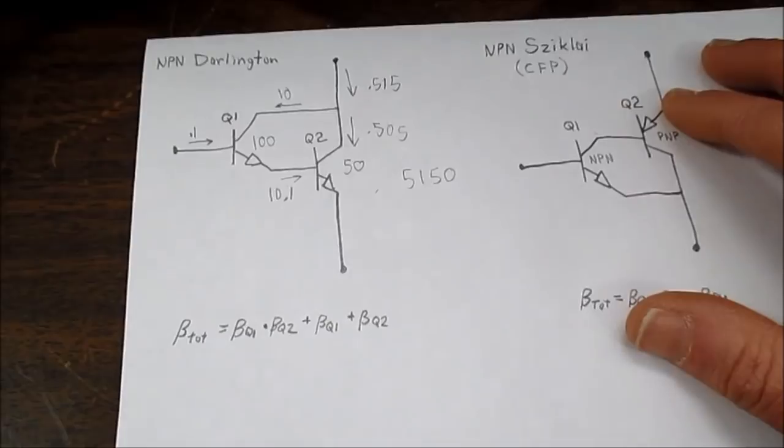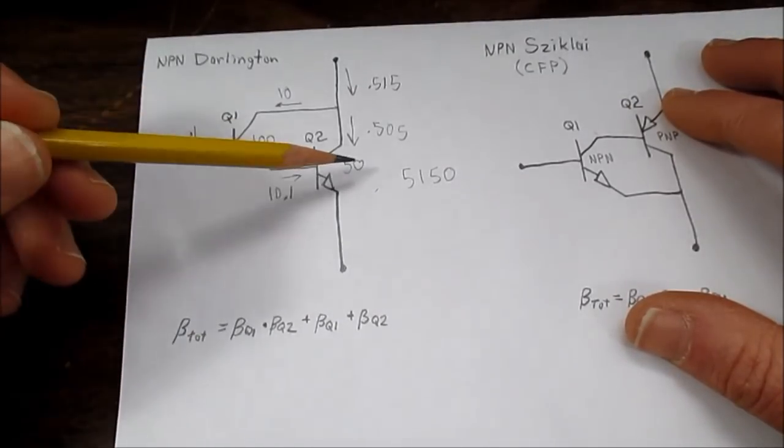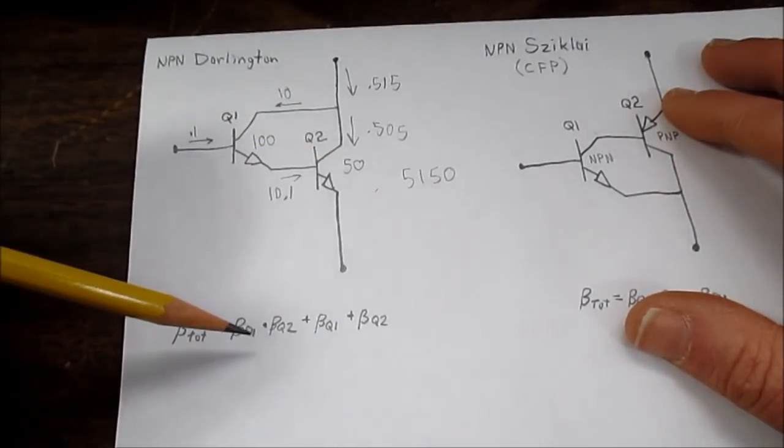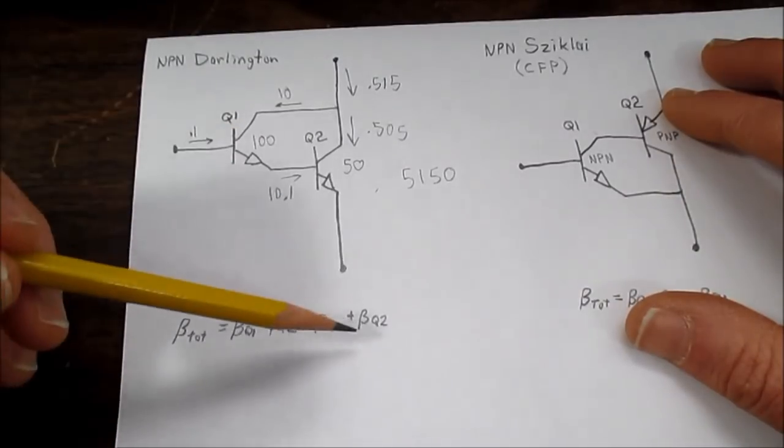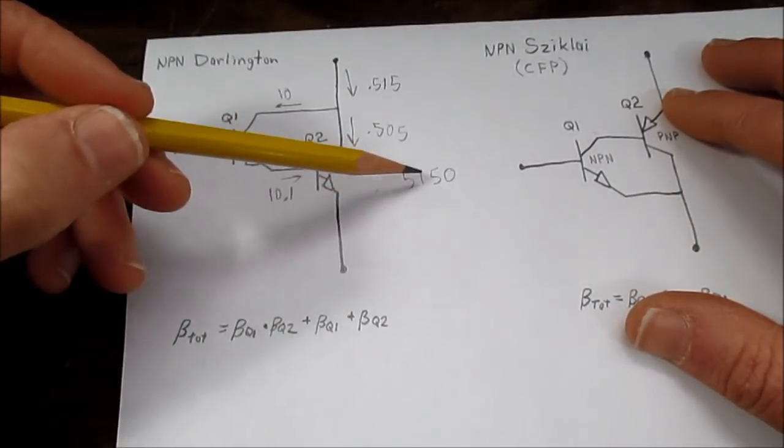So let's see if the math works out here. So we have 100 times 50 which is 5000, plus 100 plus 50, which is 5150.